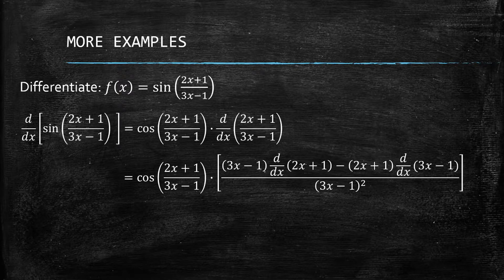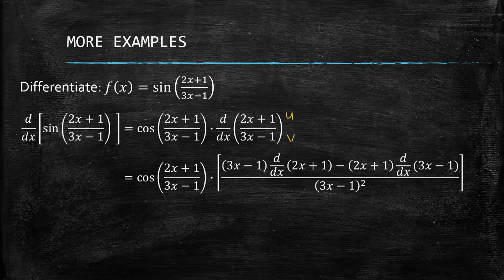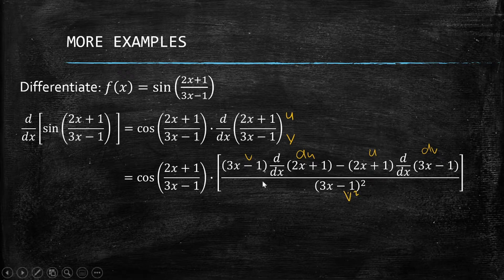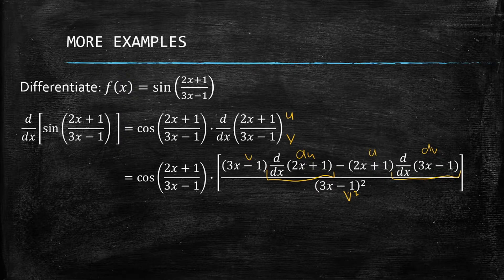If we get the derivative of that inner expression, we can use a quotient rule. Our u is (2x + 1) and our v is (3x minus 1), so we have v·du minus u·dv all over v squared. Our concern right now is just the derivative of 2x + 1, which is 2, and the derivative of 3x minus 1, which is 3.